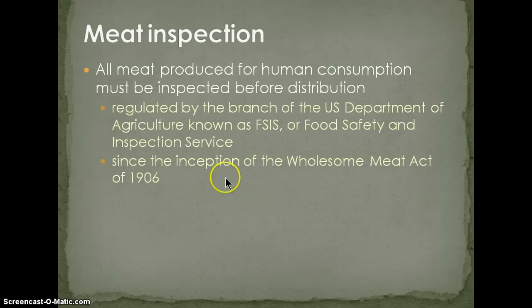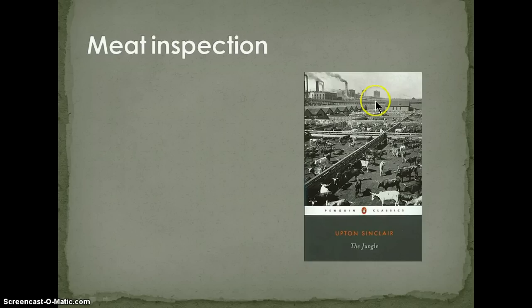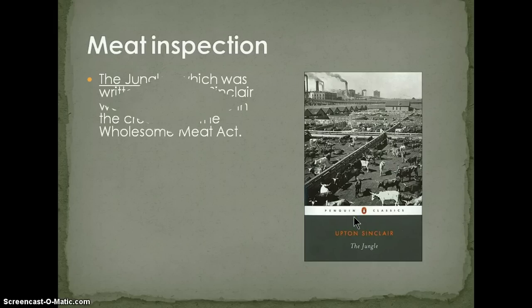Meat inspection is mandatory — all meat produced for human consumption must be inspected before distribution. Meat inspection is done by the branch of the USDA known as FSIS, or Food Safety and Inspection Service. FSIS was developed in 1906 with the inception of the Wholesome Meat Act.